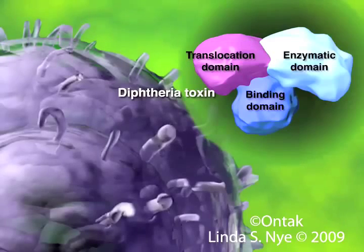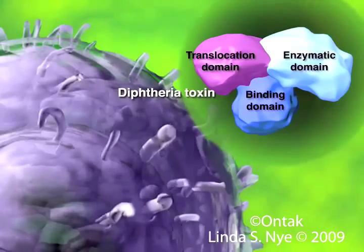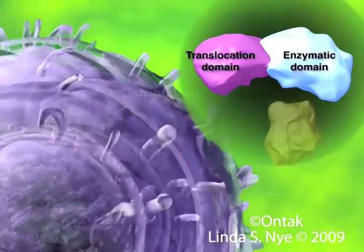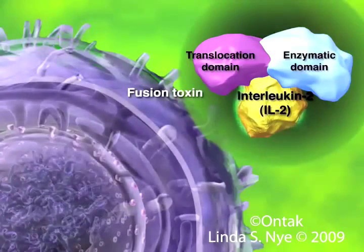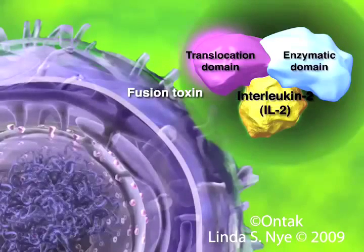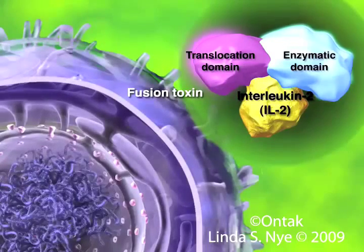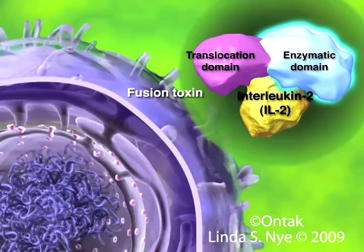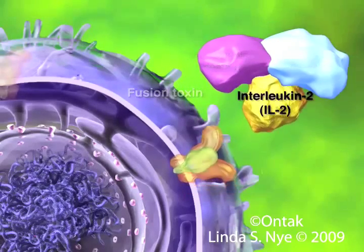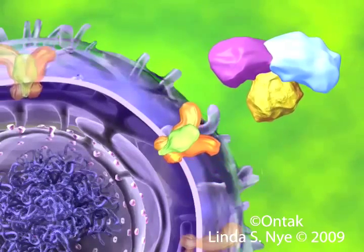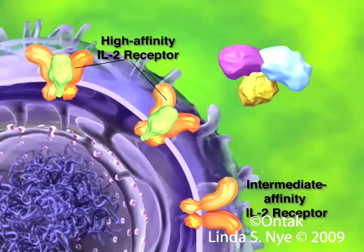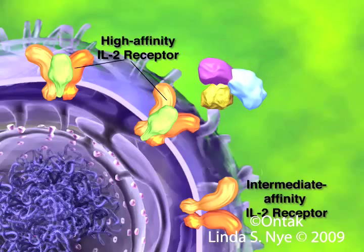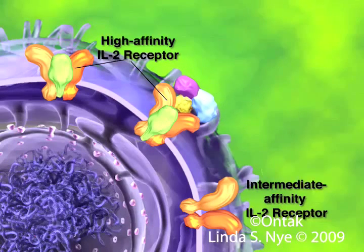ONTAC is a hybrid protein in which the human IL-2 polypeptide replaces the receptor binding region of the diphtheria toxin, creating a fusion toxin. Thus, the ligand binding of IL-2 is linked to the translocation and enzymatic domains of diphtheria toxin. The IL-2 portion gives ONTAC its specificity for binding to the high affinity and intermediate affinity IL-2 receptors, as observed in ex vivo studies.